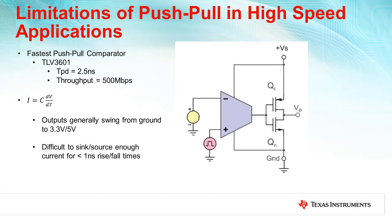Meanwhile, the fastest push-pull comparators on the market are currently limited to 2.5 nanoseconds propagation delay with 500 megabit per second data throughput. The reason for this limitation can be explained by how current is related to both capacitance and voltage, where I equals C dV/dt. For a given capacitive load, having an output swing anywhere from ground to 3.3 volts or 5 volts with fast rise and fall times less than 1 nanosecond require a large amount of current that the comparator output stage is not capable of sinking or sourcing.